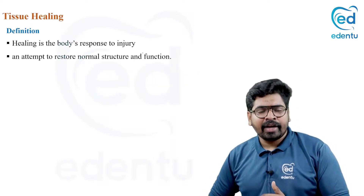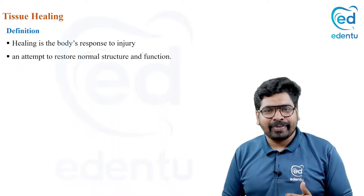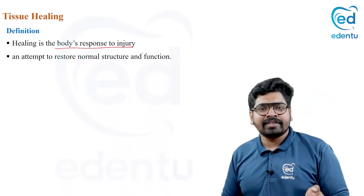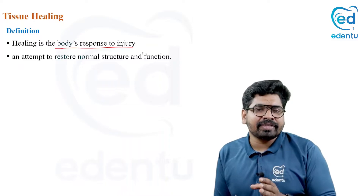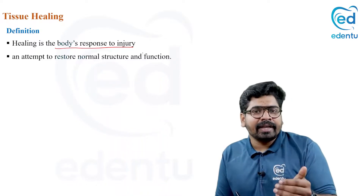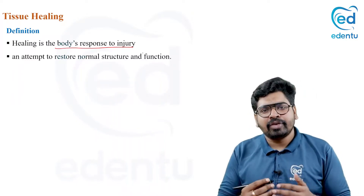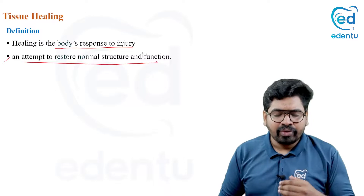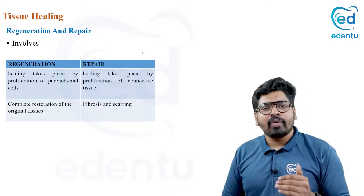Healing is the body's response to an injury. When a cell has a small dose of injury or is in a small stressful state, it can go to a state called reversible cell injury. If the stress is removed and favorable conditions are given, the cell can heal and come back to the normal stage. So healing is an attempt of the cell to restore its normal function and structure after an injury.